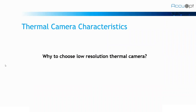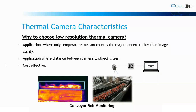So here a question arises: why would somebody choose a low resolution camera? The low resolution cameras are usually used in applications where only the temperature measurement is the major concern — we do not require any image clarity, only the temperature measurement is our main concern. Also in applications where the distance between the object and the camera is very less, for example in conveyor belt monitoring, the camera is placed not too far from the conveyor. And these cameras are also cost effective as compared to higher resolution cameras.